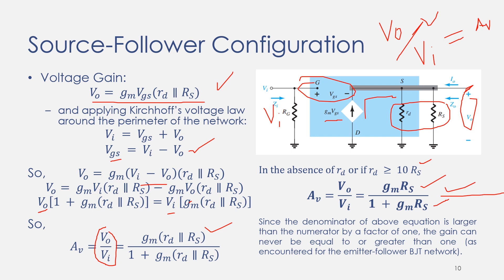Looking at this equation, the denominator is always larger than the numerator, which means voltage gain will always be less than one. This is a very important point. This is similar to the BJT emitter follower configuration, which also has a gain less than one. Similarly, here the common drain configuration has a voltage gain less than one, or approximately equal to one in most cases.